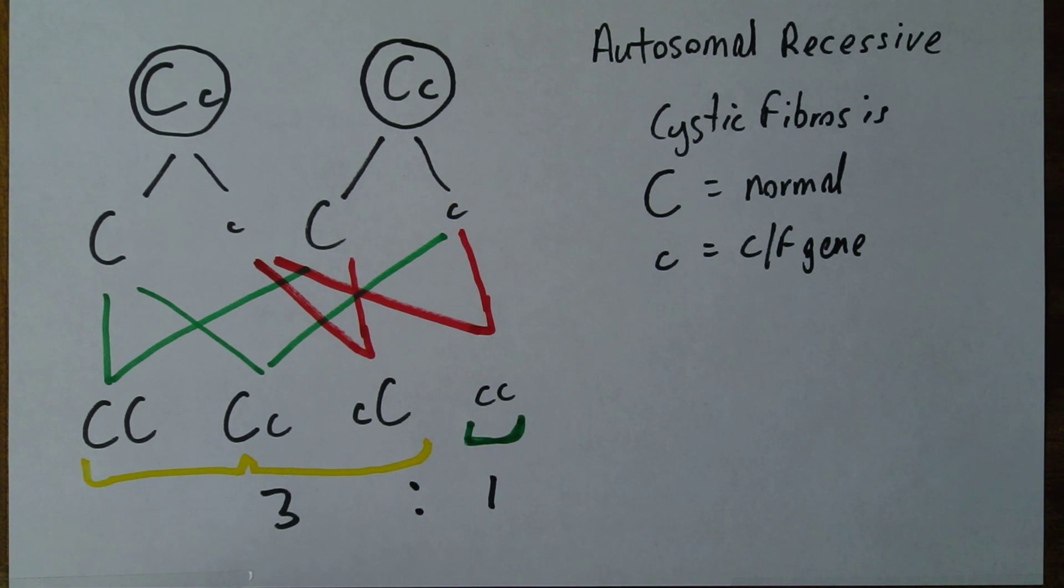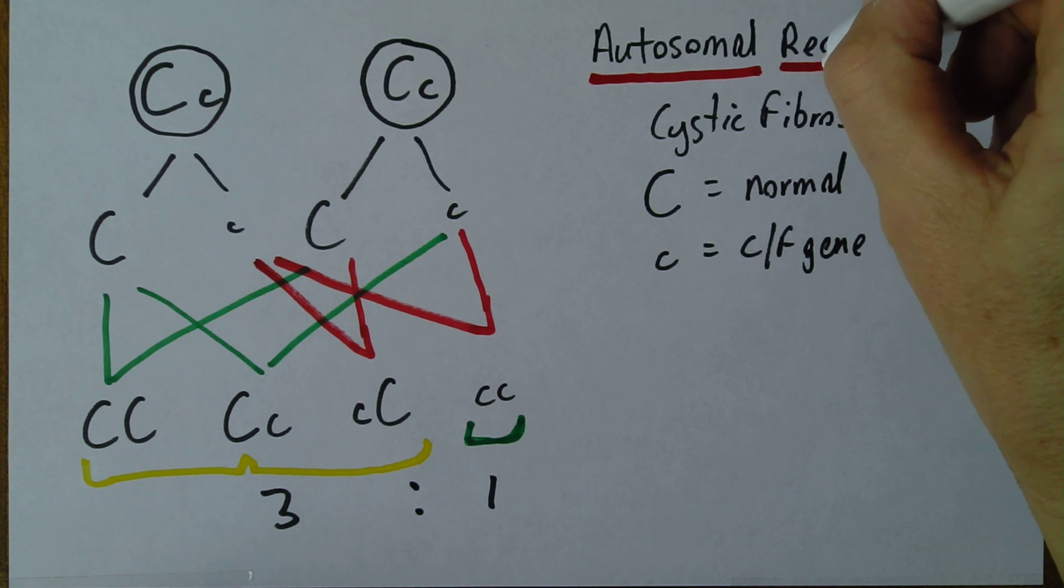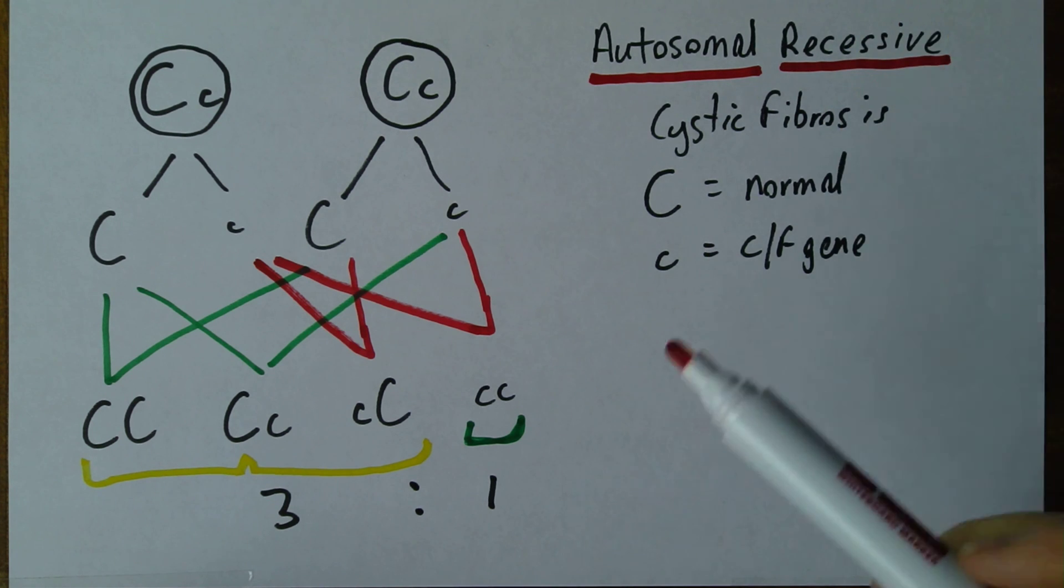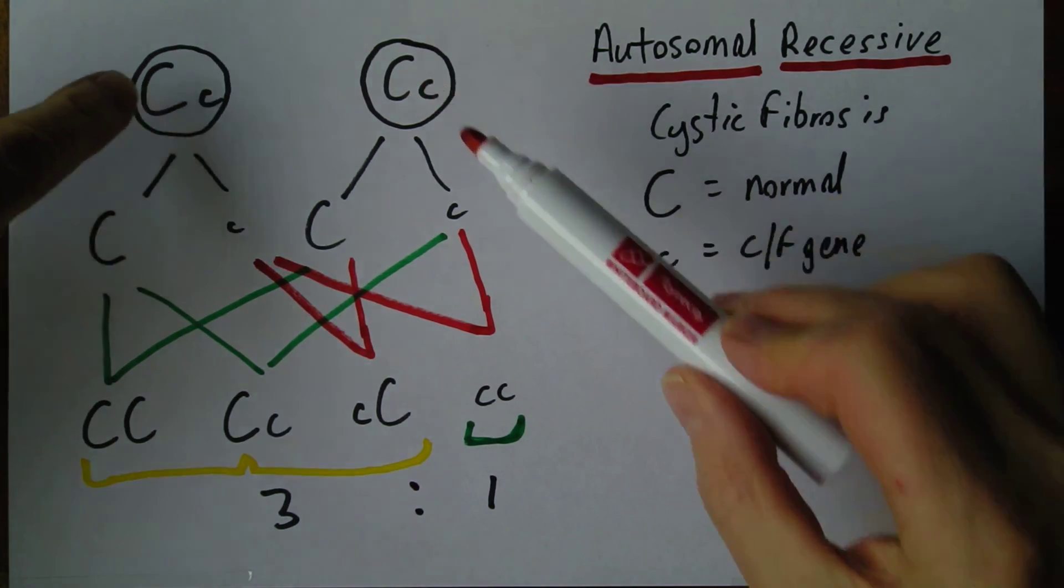So this is what we find with autosomal recessive disorders. The three to one ratio. One chance in four that any particular child from the marriage would be affected, assuming that both parents are heterozygous for the recessive pathological gene.